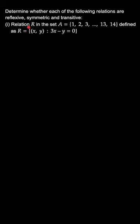Well, the relation says relation R in the set A = {1, 2, 3, ..., 13, 14} as elements defined as R = {(x, y) : 3x - y = 0}.